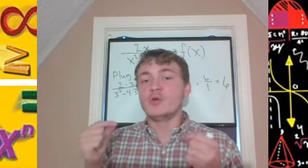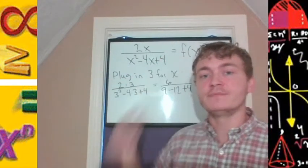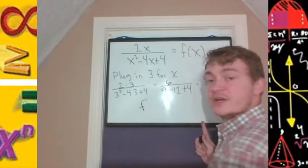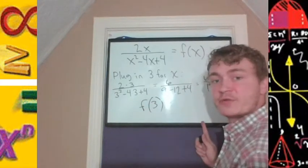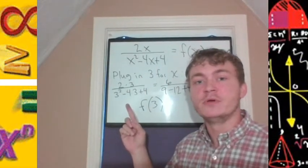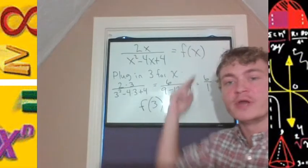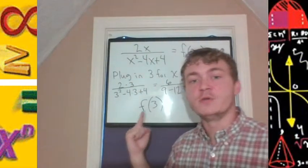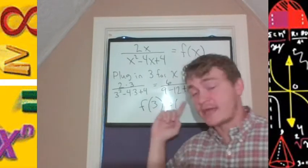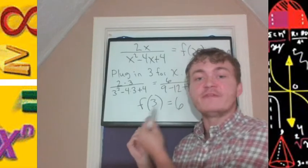For rational expressions, the domain of a rational function is defined such that our denominator cannot equal zero. When x equals 3, the function takes 3 and multiplies by 2 in the numerator, then squares 3, subtracts 4 times 3, and adds 4 in the denominator, dividing those two numbers to give us 6. So f of 3 equals 6, meaning the function is 6 when x is 3.